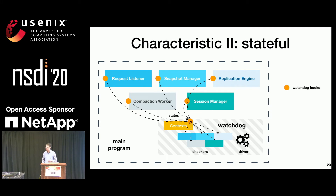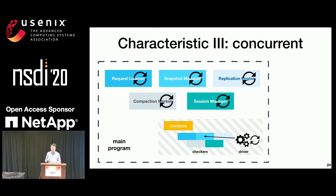Our watchdog abstraction has three main characteristics. First, each checker should be customized to inspect a certain system module for issues specific to that module. Second, to accurately reflect the status of the main execution, we need to make our checker stateful — the checker needs to use the latest program states in checking. In our design, we call such states contexts. Third, checkers run concurrently with the main execution. Essentially, we decouple runtime checking from the main execution, so watchdog can provide isolation for both performance and safety.